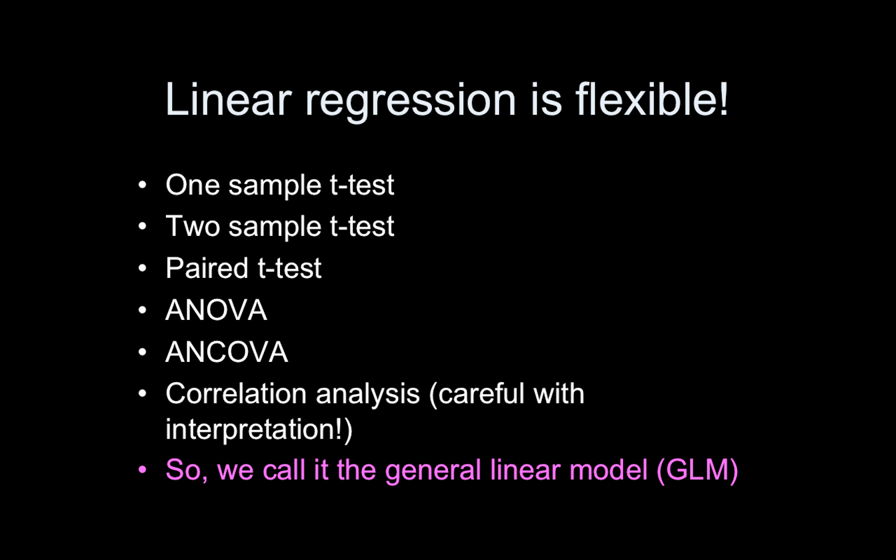Linear regression is super flexible. There's a one-sample t-test, two-sample t-tests, paired t-tests, ANOVAs, ANCOVAs, and correlation analyses. I'll even show that for very balanced, perfect repeated-measures ANOVA you can use linear regression. Therefore you can call it the general linear model because it generally just does everything. Also, simple linear regression gives you an equivalent p-value to a Pearson correlation — but be careful, the beta is not a Pearson correlation, so be careful with your interpretation.